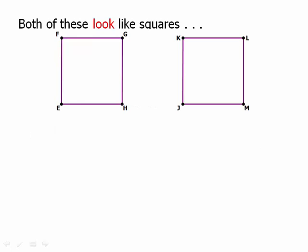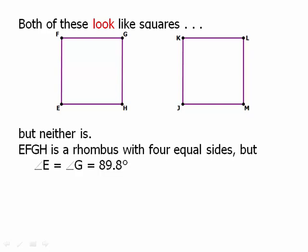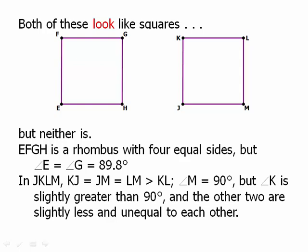Here are two drawn-to-scale diagrams. Both look like squares, but neither is. The one on the left, EFGH, turns out to be a rhombus — the four sides are equal, but one angle is slightly less than 90 degrees and another is slightly more, so it's not exactly a square. The other one has three equal sides but one side that's a little bit less — KL is shorter. Angle M looks like 90 degrees, but angle K is greater than 90 degrees. So just because something is drawn-to-scale and looks like a square, there's no guarantee that it is a square.